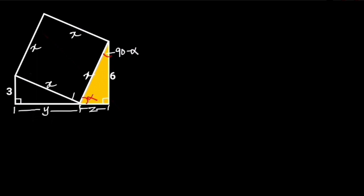Let's observe that this angle is 90 degrees. If that is the case, then in the red triangle, this angle will be 90 degrees minus alpha. Reason: sum of angles in a straight line. This red triangle is also a right triangle, so this remaining angle of the triangle will be alpha. Reason: sum of angles in a triangle.